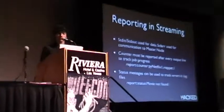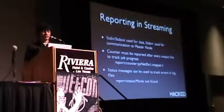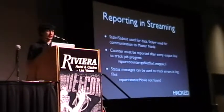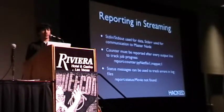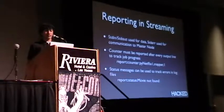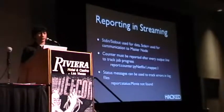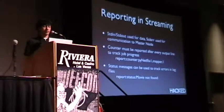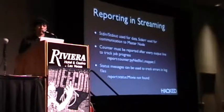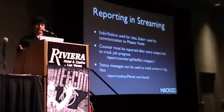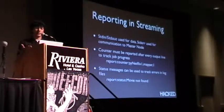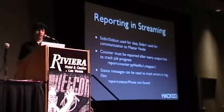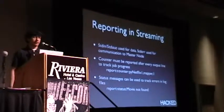Reporting in streaming: since you're using standard in and standard out to handle your data, you have to use standard error to communicate with the master node. Since the master node kills any job that doesn't report back, you have to use a counter after every line you process. You do this by writing to standard error: reporter, counter, then your job name, the phase — Mapper in this case — and then comma one. You can also use status messages to track errors in the log files.